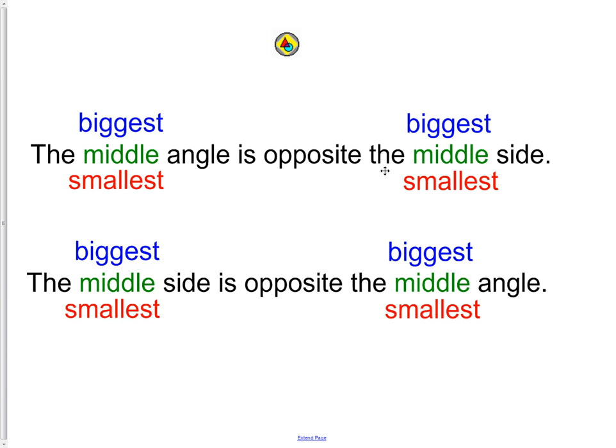The biggest angle is opposite the biggest side. The middle angle opposite the middle side, and the smallest angle opposite the smallest side. These also can be read conversely or flipped. The biggest side is opposite the biggest angle. The middle side is opposite the middle angle, and the smallest side is opposite the smallest angle. Big to big, middle to middle, small to small, when we're comparing the angles and the sides opposite them.